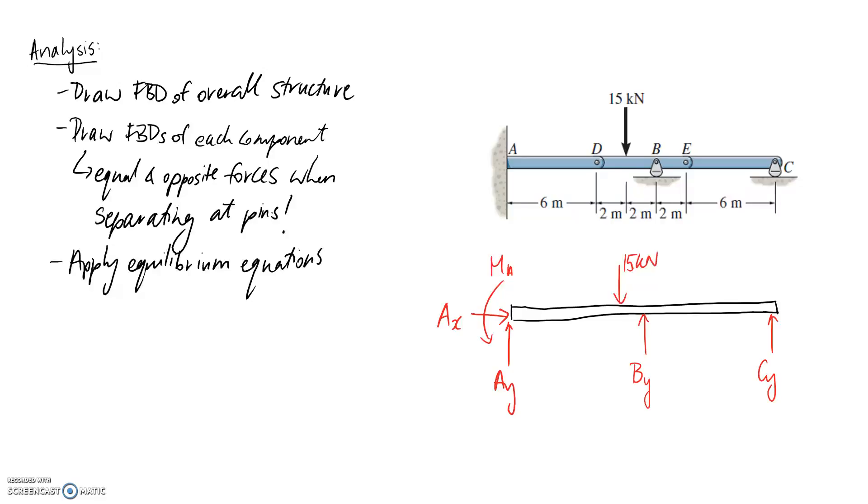So let's go ahead and demonstrate this. We're going to separate this into three different parts. We're going to have the part AD. We're then going to separate at this pin. So it's then going to become a second part, which is DE. Again, separate at this pin, and we get our final bit, which is EC.